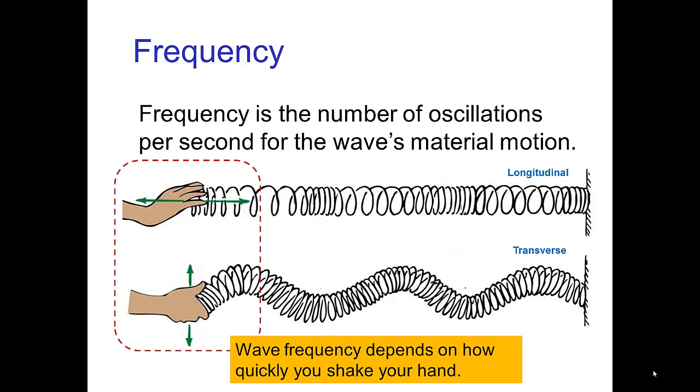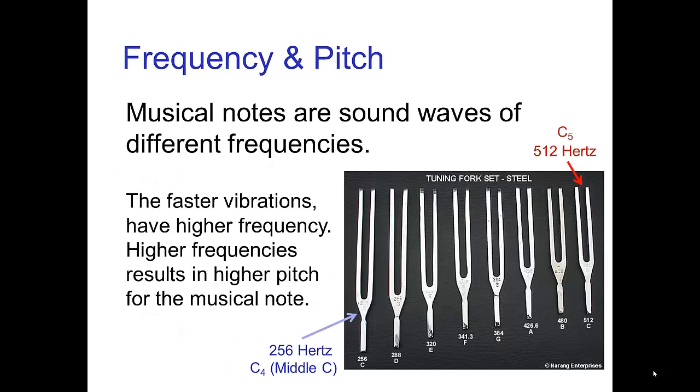The frequency is the number of oscillations per second for the wave's material motion. If we were creating waves on a slinky, then how rapidly we were shaking the end back and forth would determine the frequency.